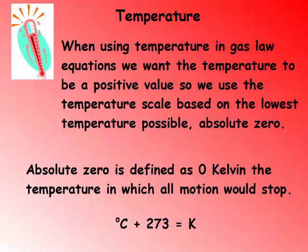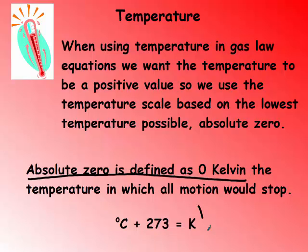When using temperature in gas law equations, we always want the temperature to be a positive value. The temperature scale based on the lowest temperature possible, or absolute zero, is Kelvin. Absolute zero is defined as zero Kelvin — this is the temperature at which all motion would stop. To get to Kelvin, we just take Celsius and add 273.